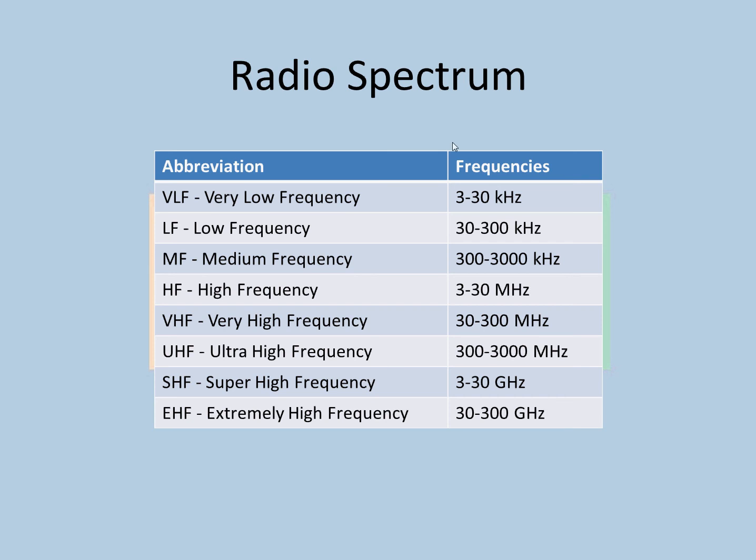Now, radio spectrum. This is what the radio spectrum looks like: VLF, LF, MF, HF, VHF, UHF, SHF, and EHF. These are the frequencies.